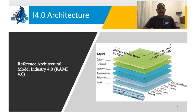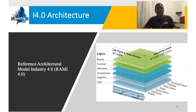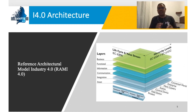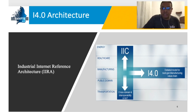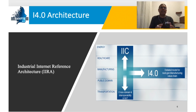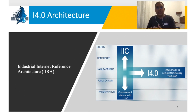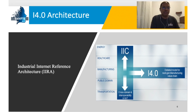There are two main architectures. One is RAMI — the Reference Architecture Model for Industry 4.0 — which is a three-dimensional architecture with layers and standards in each dimension. The other is IIRA, the Industrial Internet Reference Architecture, which shows the domains in which Industry 4.0 can be applied.